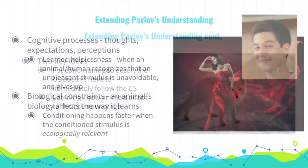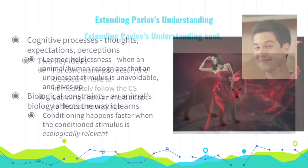There are two key ideas from Pavlov's work. First, for conditioning to occur the unconditioned stimulus does not have to immediately follow the conditioned stimulus — for example, chemotherapy triggers nausea more than an hour after treatment, yet cancer patients still develop nausea to the sights, sounds, and smells of a clinic. Second, learning is how animals adapt to their surroundings.